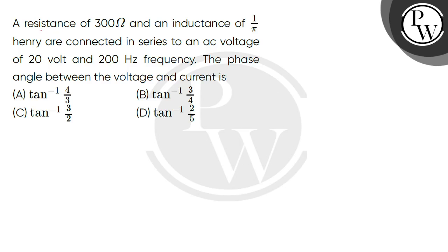Let's read this question. A resistance of 300 ohm and an inductance of 1 by π henry are connected in series to an AC voltage of 20 volt and 200 hertz frequency. The phase angle between the voltage and current is...